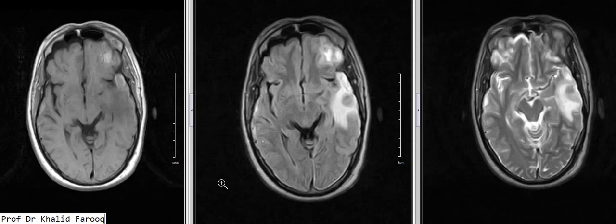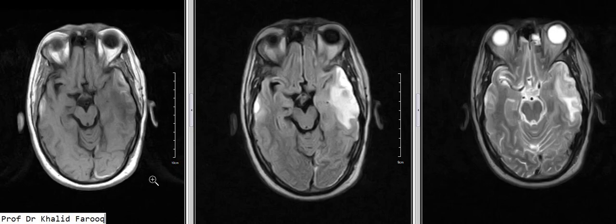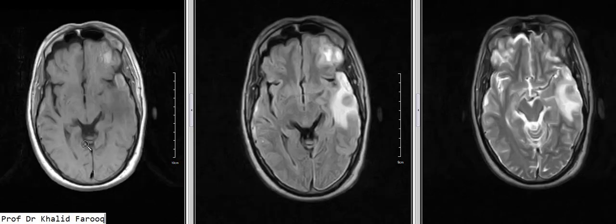This represents a tiny strip of subdural hematoma. We can also see abnormal signals in the subdural space over the right temporal lobe, which can be further confirmed on FLAIR sequence.